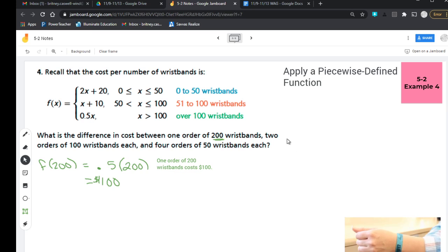So now then we have two orders of 100 wristbands each. So what I'm going to do is this is going to now move me into this kind of red zone. Because if I order 100 wristbands, I'm paying this amount. So what I'm going to do is I'm going to find f(100). And then I'm going to multiply that number by two.